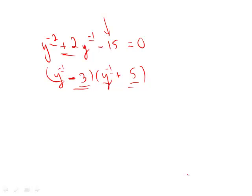Now they want to know what could be one of the values of y. We can set both of these equal to 0. We can get y to the negative 1 equals 3, and we can get y to the negative 1 equals negative 5.